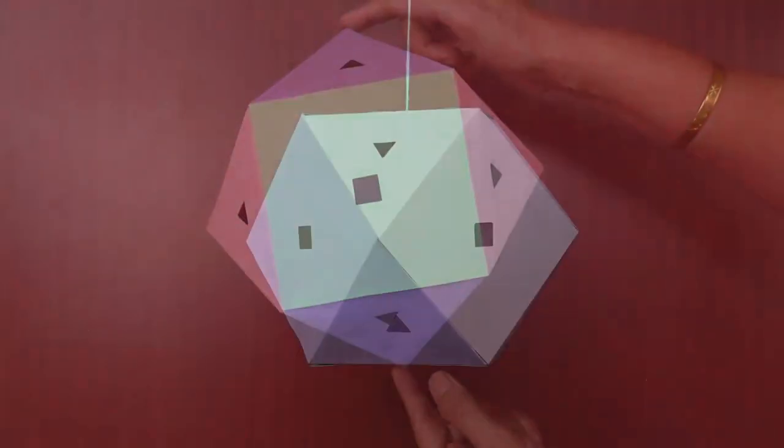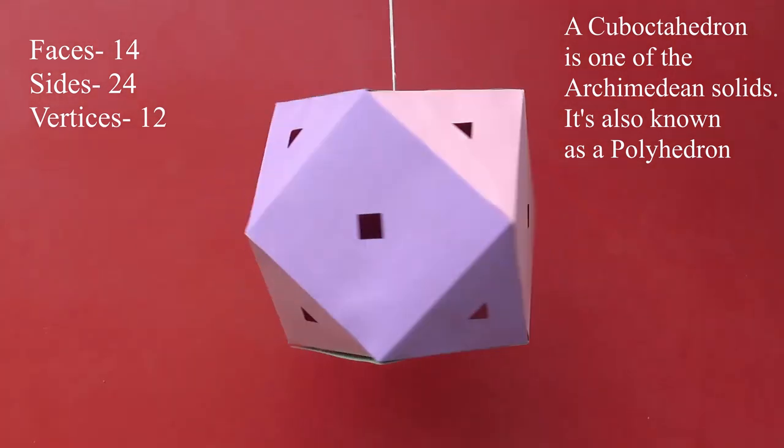This cuboctahedron has 14 faces, 24 sides and 12 vertices.